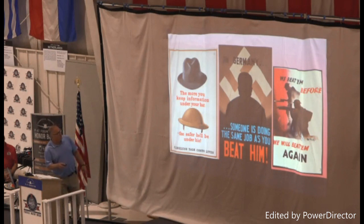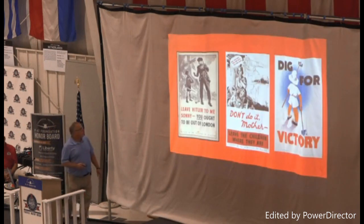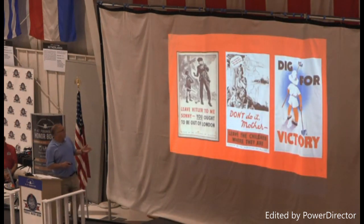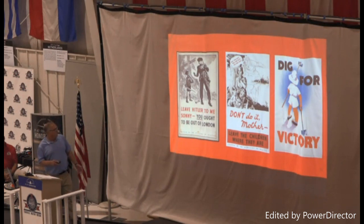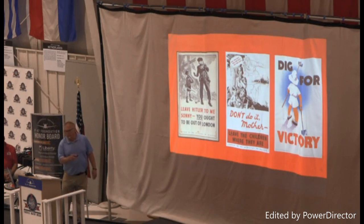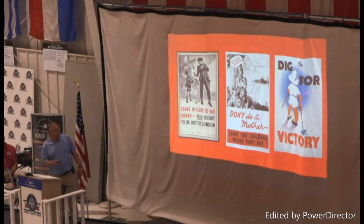Other British propaganda examples: 'We beat them before, we'll beat them again.' Posters about children — since children were sent to the countryside during the bombings, there were posters like 'Leave Hitler to me, sonny — you ought to be out of London,' and one showing Hitler whispering in a mother's ear: 'Don't leave them where they are — take them back.' And posters of children helping with the victory garden.